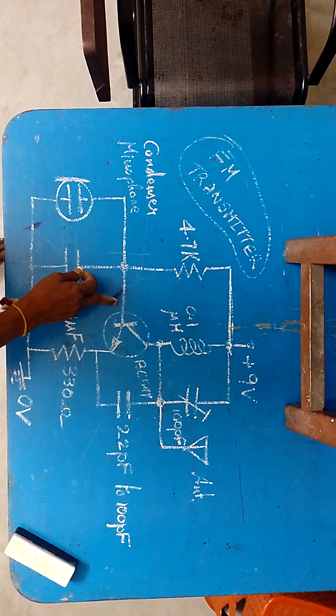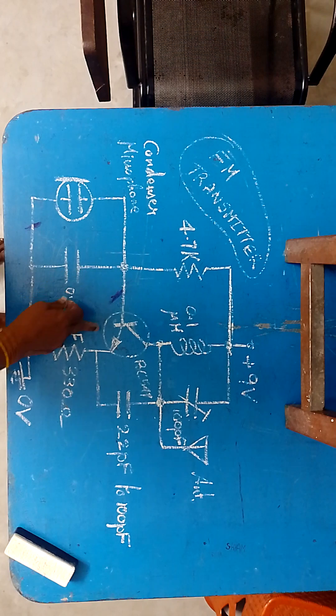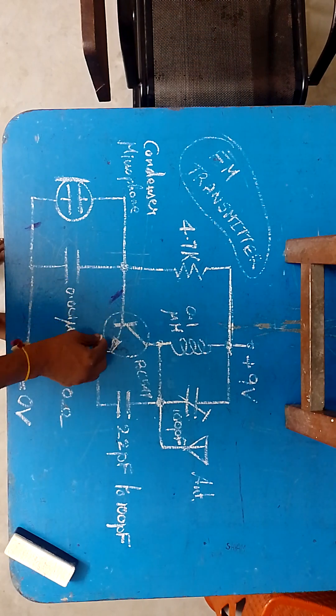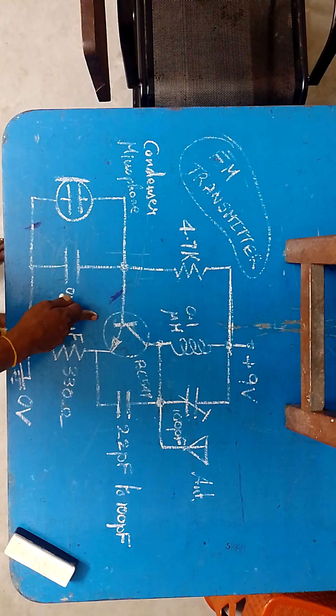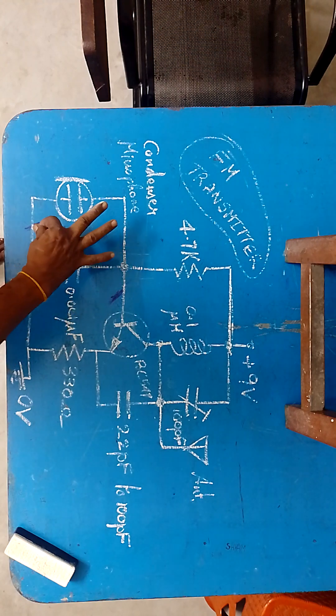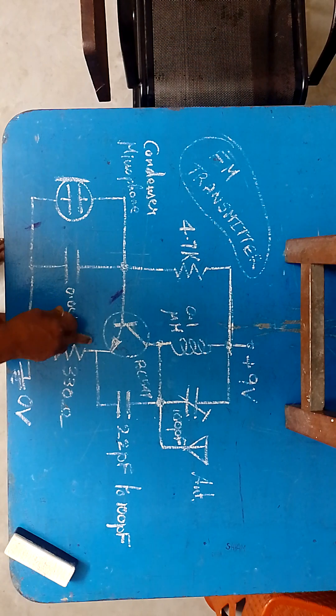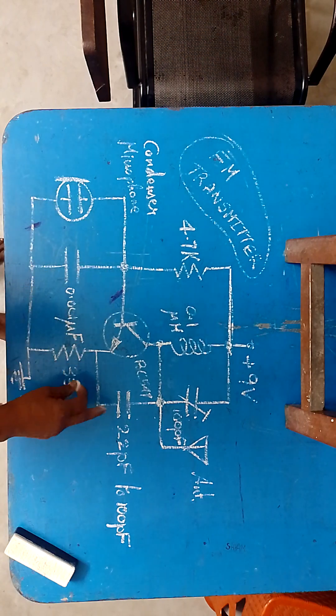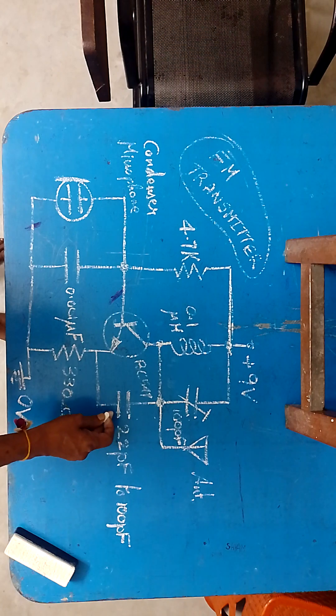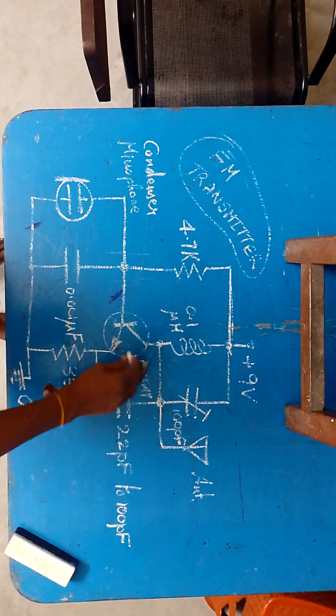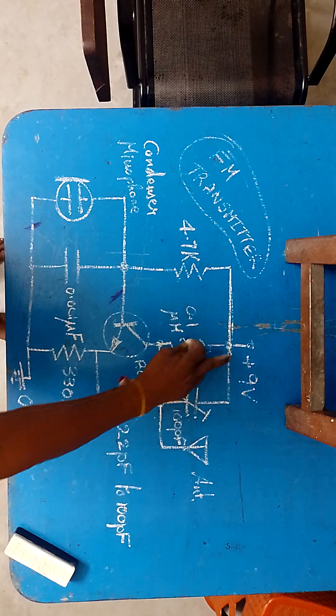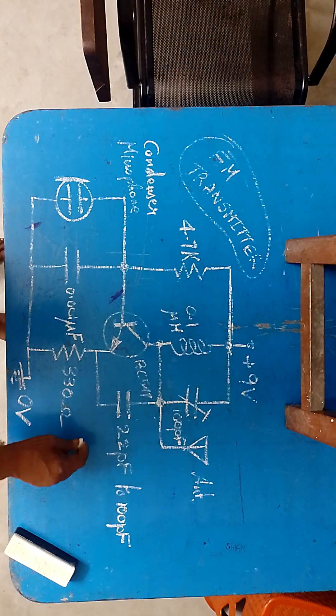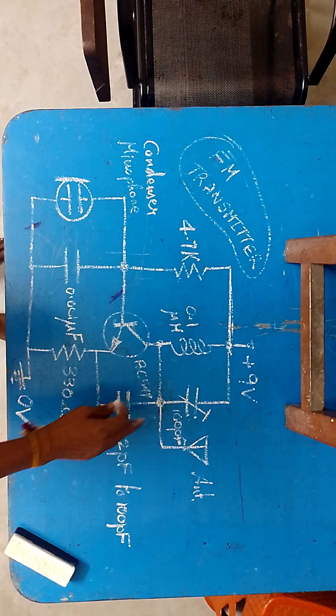So VBE base to emitter is negligible because this is plus minus, you will be having 0.6 volts. Other than that, this circuit comes, if you forget about this voltage drop, this capacitance comes in parallel with this value. And these two, since this is grounded, you can imagine that between collector and emitter you are having this circuit.